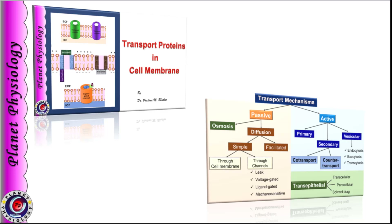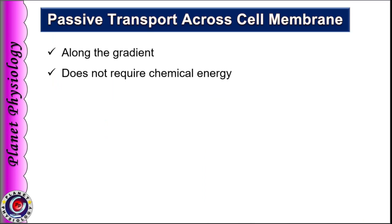As we have studied in the previous session, passive transport across the cell membrane is along the gradient, i.e., from higher concentration to lower concentration, or it can be along the pressure or electrical gradient as well. Because it is along the gradient, it does not require any chemical energy. Just the inherent kinetic energy of the molecule is sufficient to move the substances along their gradient.